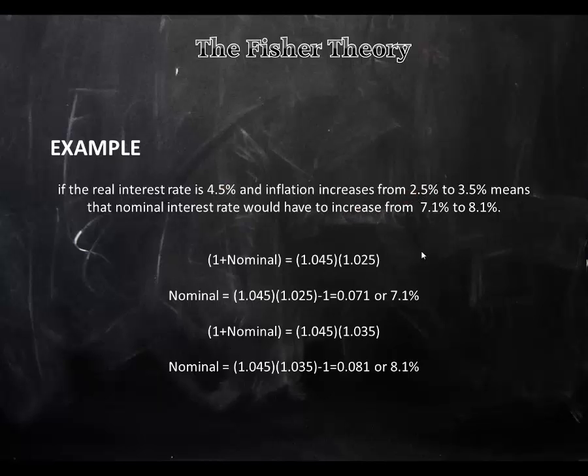So to get the nominal rate if inflation increases to 3.5%, we're going to do the same thing. We're going to multiply 1.045 with 1.035, which is here. Reverse the formula, and we get that it's 8.1%.